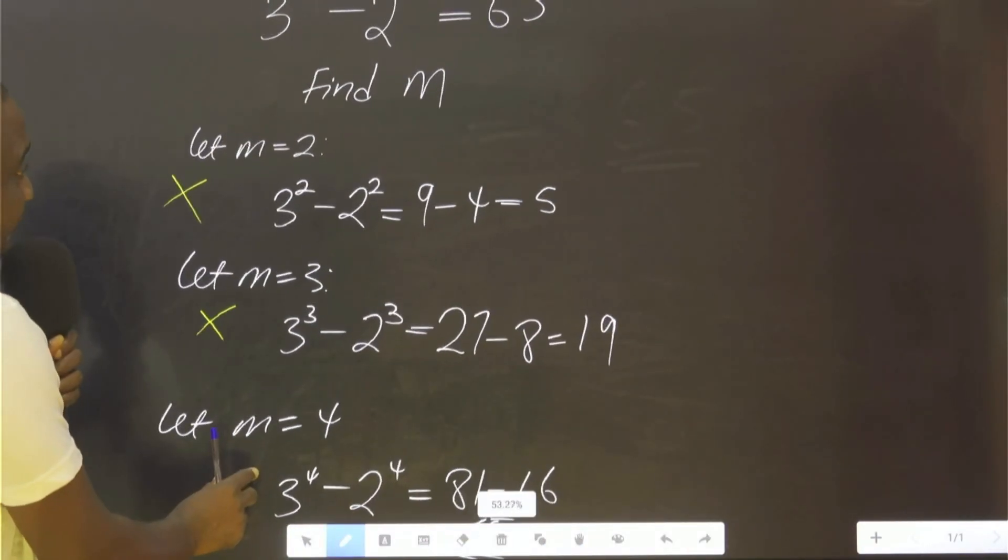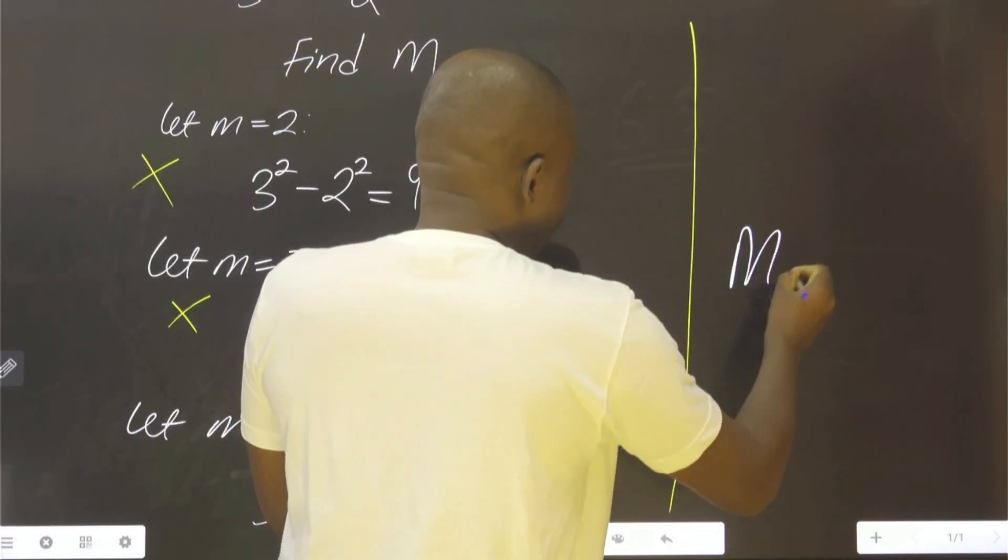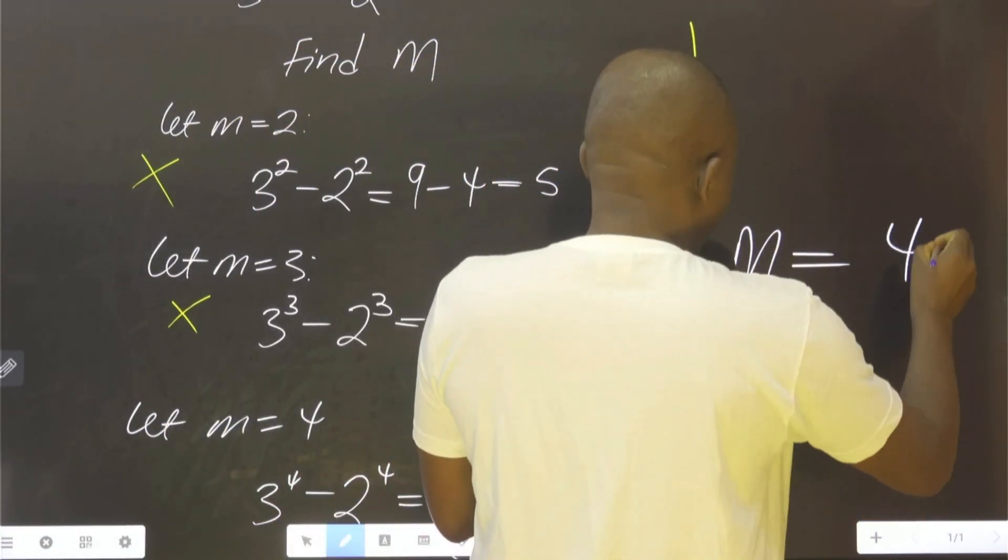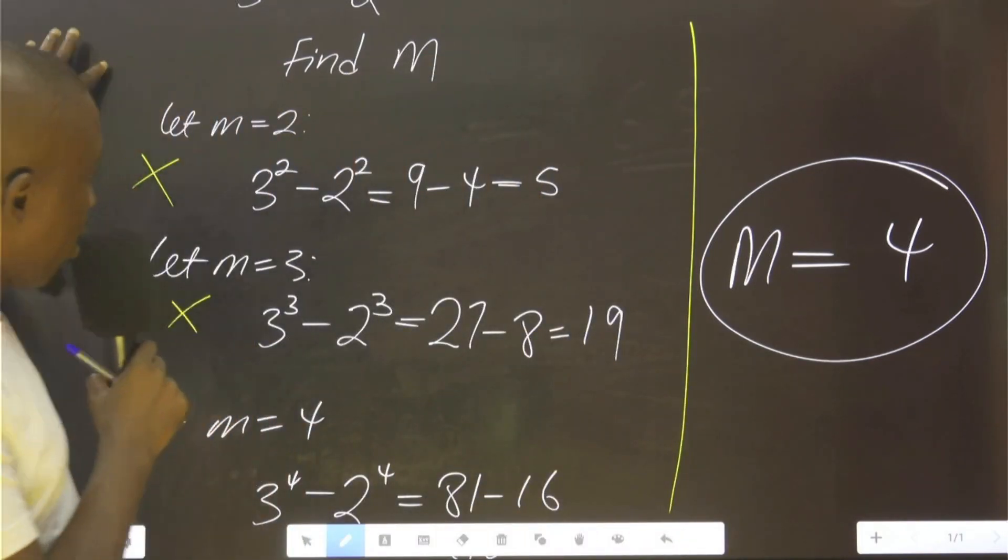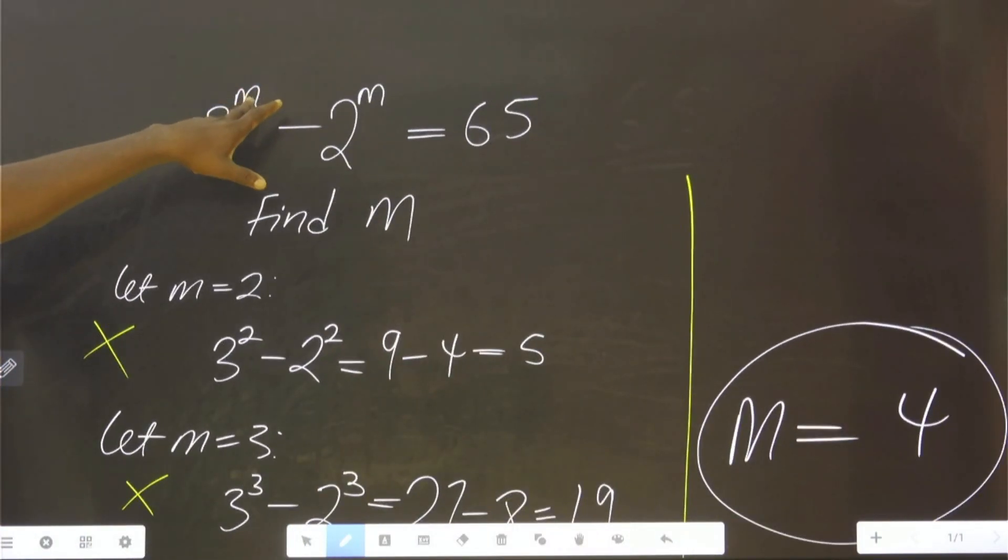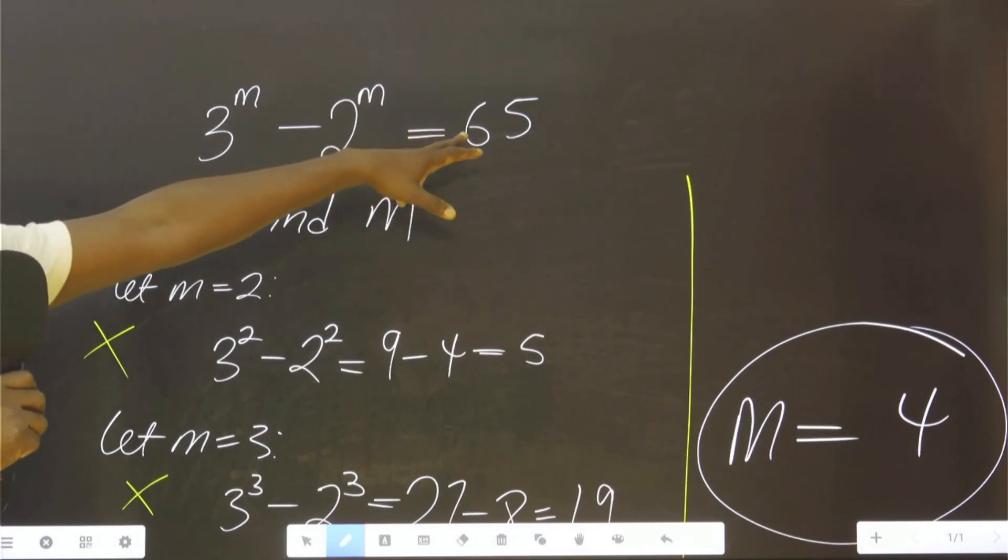Therefore, we are concluding that our m equals 4, because if you substitute 4 in place of m, you're going to have 65.